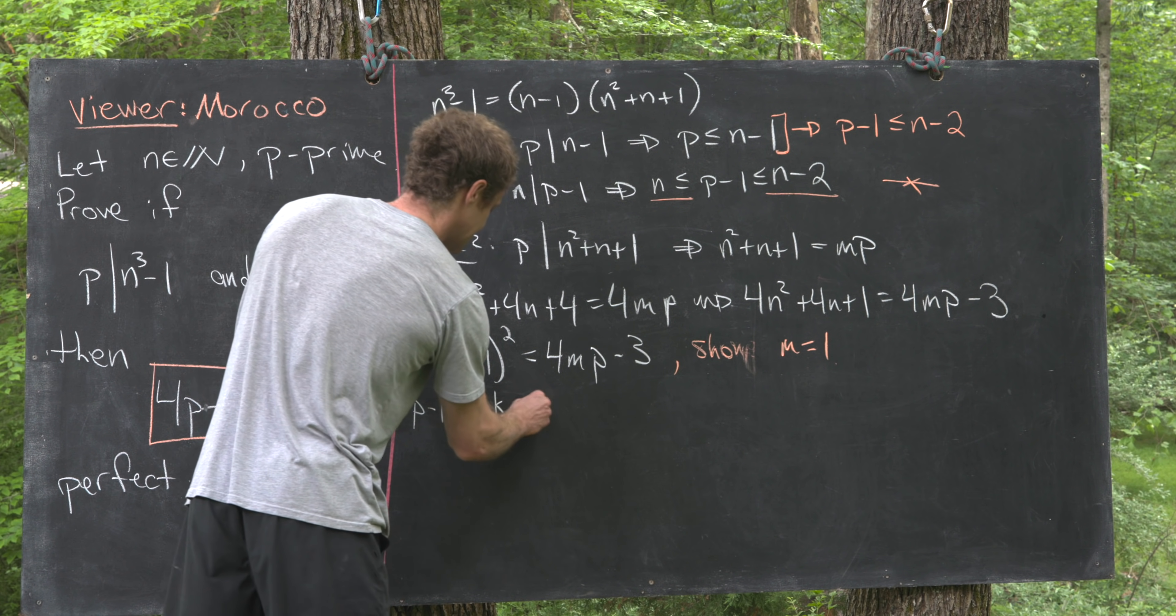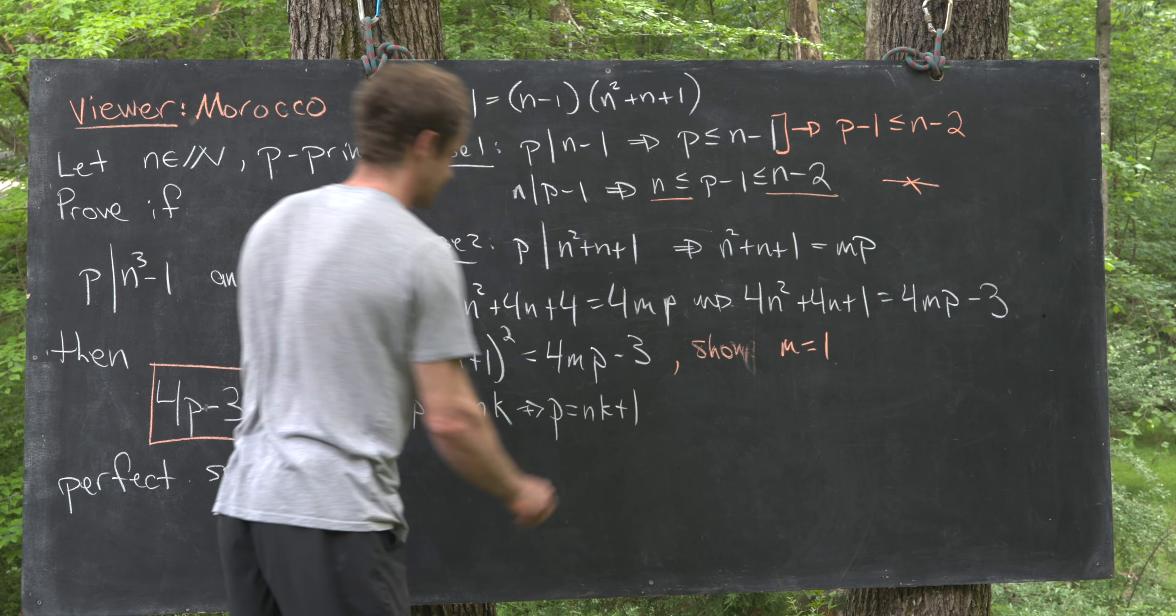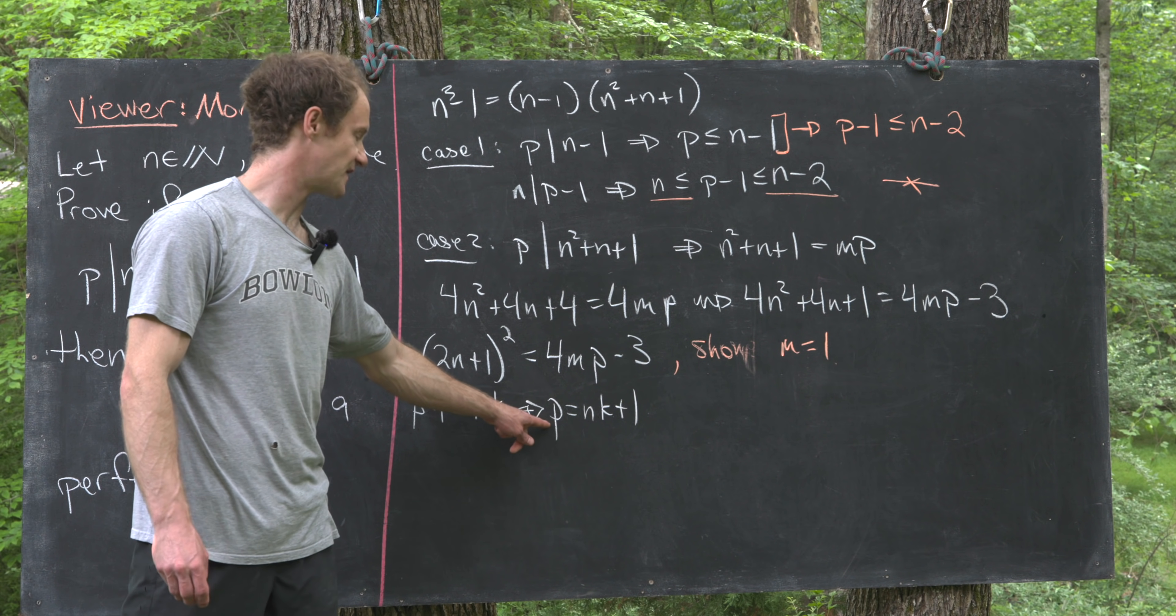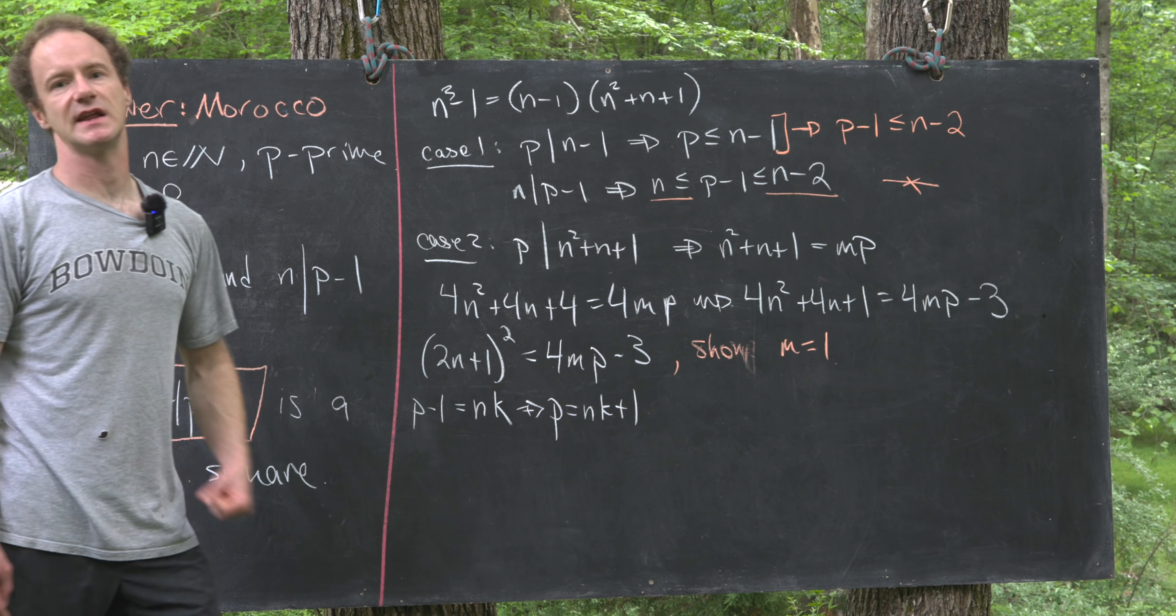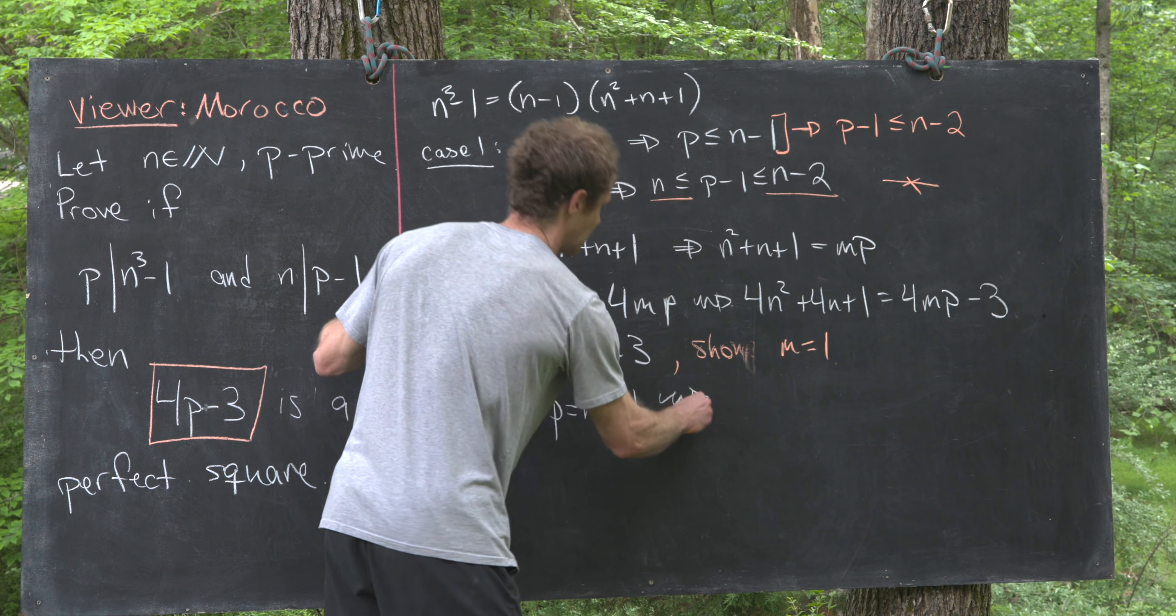But that tells us that p is equal to nk+1. But now we can insert this into our equation relating n²+n+1 and p, and that'll give us the following.